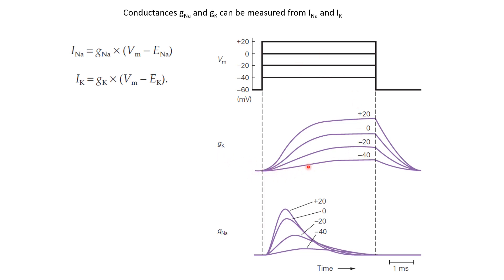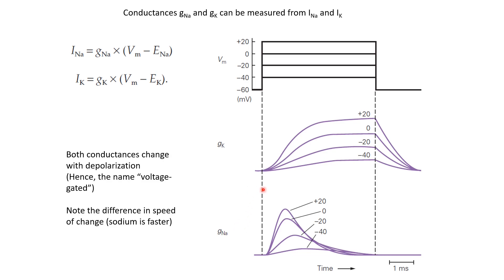This is what we see. At minus 40 millivolts, we see the conductance increasing. At minus 20, it increases even more. At zero it is higher still, and at plus 20 it is even higher. For sodium we see something similar — at minus 40 there is a smaller increase in sodium conductance, at minus 20 it's more, at zero it's even more, and at plus 20 it's even higher. In general, both the voltage-gated potassium conductance and voltage-gated sodium conductance increase as the membrane potential is increased. That is why they are called voltage-gated conductances — because they depend on the voltage.